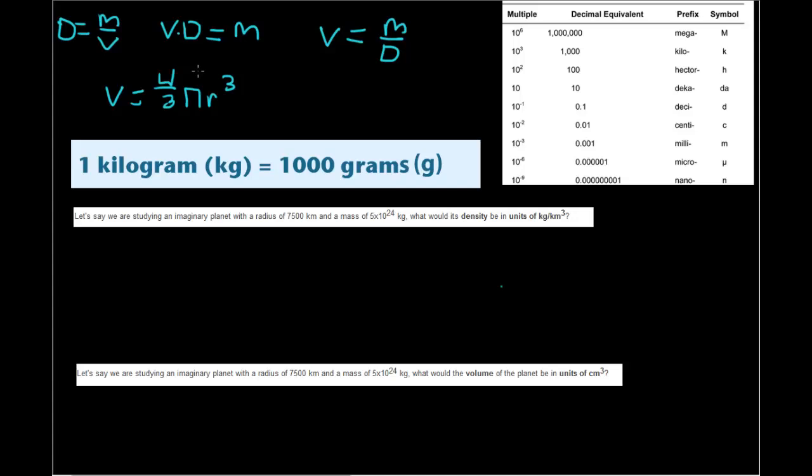The second thing you must understand about these types of problems is that there's a lot of conversions. So you have one kilogram equals one thousand grams. We usually think of planets in units of grams per centimeters cubed. We have centimeters here, and we have a meter conversion table here. So let's get to the questions and see what we need to do.